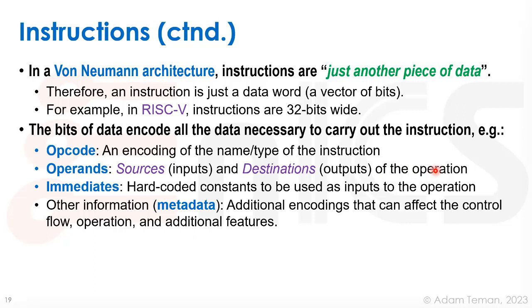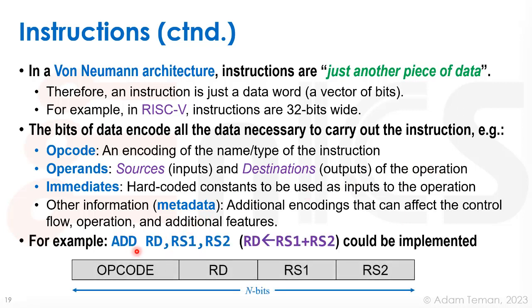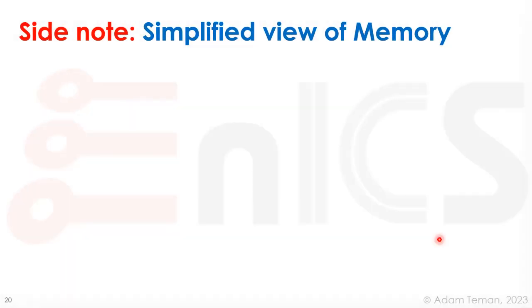We may also have other metadata and additional encodings that affect control flow and other features of the operation. For example, an ADD instruction might have a destination register and two source registers — the destination gets the sum of the two sources. In RISC-V with 32-bit instructions, some bits are assigned to the opcode, some to the destination register, and some to the first and second operands.